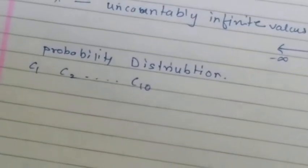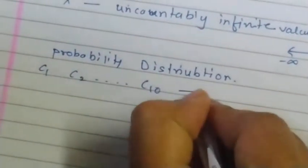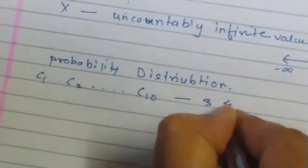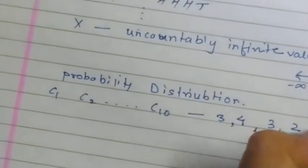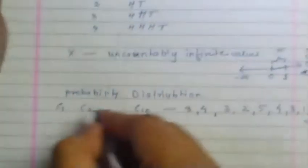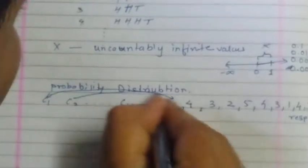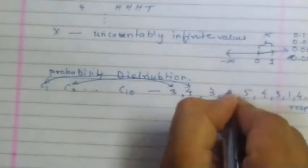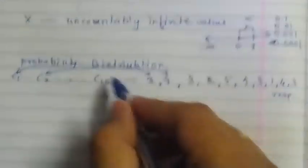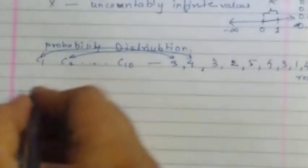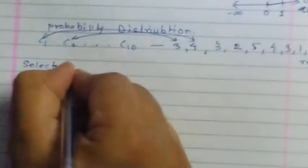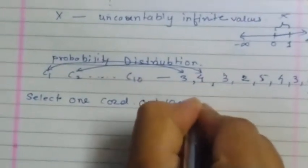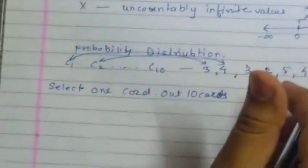Each card has a number written on it: card C1 has 3, C2 has 4, C3 has 3, C4 has 2, C5 has 5, C6 has 4, C7 has 3, C8 has 1, C9 has 4, and C10 has 3. The experiment is to select one card out of the 10 cards such that each card is equally likely to be selected.